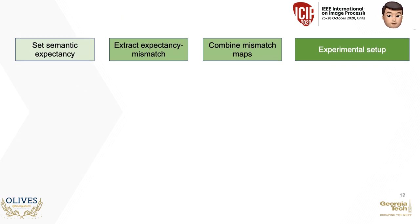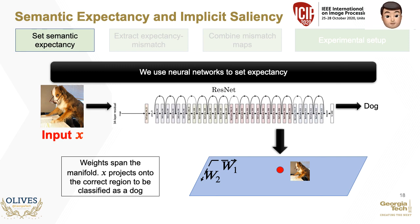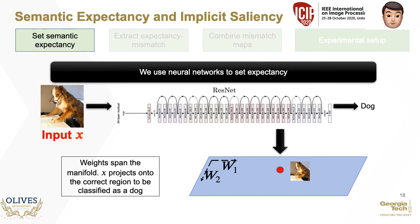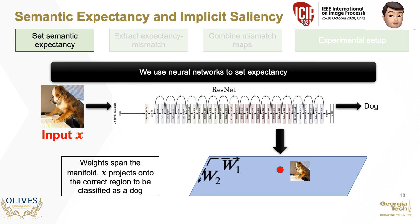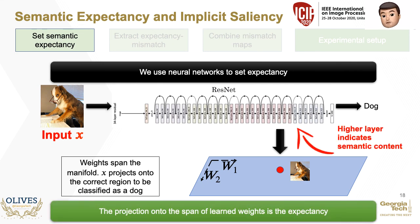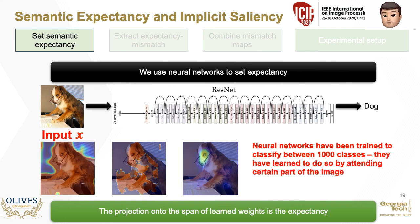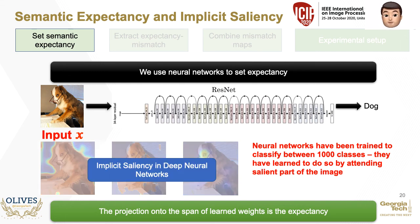Let us start by deriving expectancy. We use deep neural networks — specifically classification and detection networks — to set expectancy. Consider an input X passed through a network that correctly classifies X as a dog. Within the network, the dog is projected onto a manifold where its location is closer to the network's expectancy of what a dog is. The expectancy is the projection of data onto the manifold, and since network weights span the manifold, expectancy is defined as the projection onto the weights. Note that higher layers carry more semantic content. The network is trained to classify between thousands of classes, so it must attend to fine-grained visual differences, meaning there is implicit saliency built within the network.